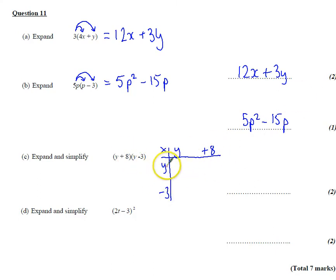And then when I multiply each of those things, I get y times y, which is y squared. Y times 8 is 8y. Y times minus 3 is minus 3y. And I get minus 3 times 8, or 8 times minus 3, which is minus 24.